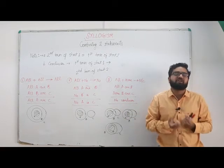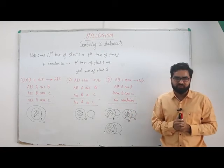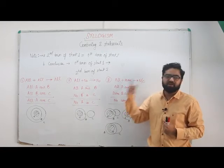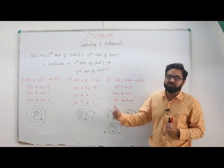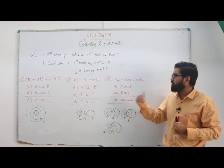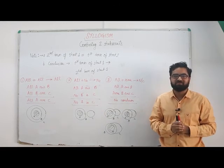So all the possibilities are there but we are not certain about any single thing. So All + Some is no conclusion. I'll just recap: when we have All + All the result is All, when we have All + No the result is No, when we have All + Some there's no conclusion. Thank you.